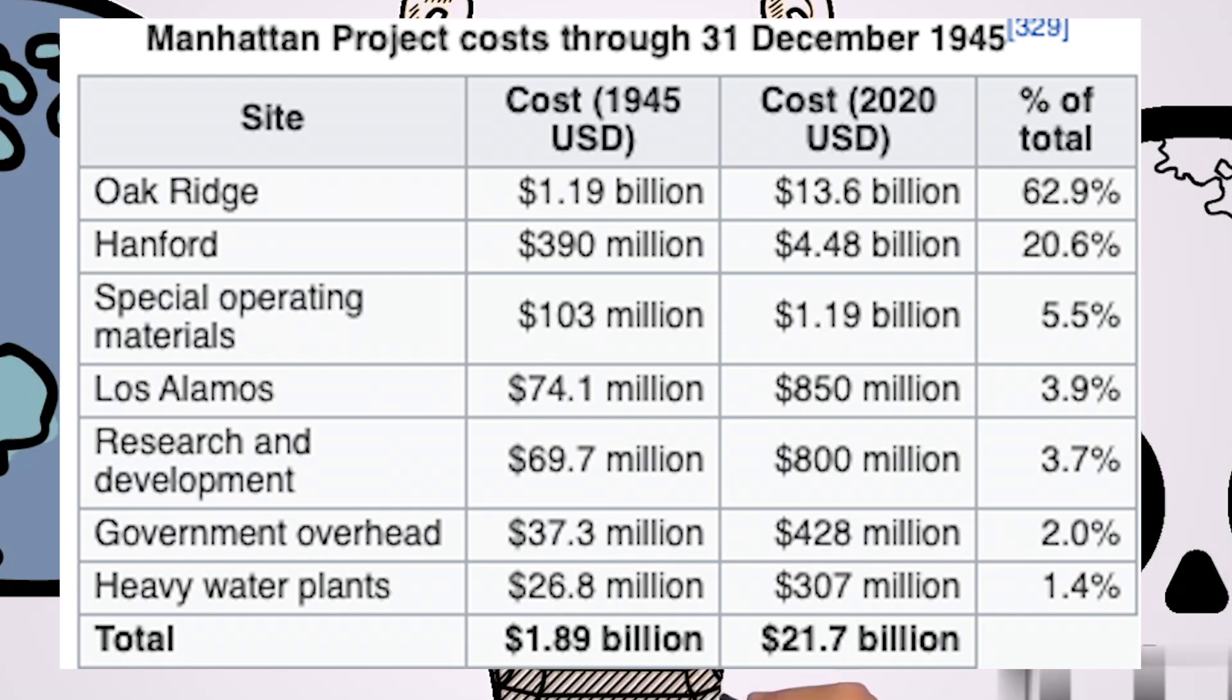With that all said and done, the project cost about 1.89 billion dollars, with over 90% of the cost being for building factories and producing materials, with only less than 10% for development and production of the actual weapons themselves. Research and production took place on more than 30 sites across the U.S., the U.K., and Canada.